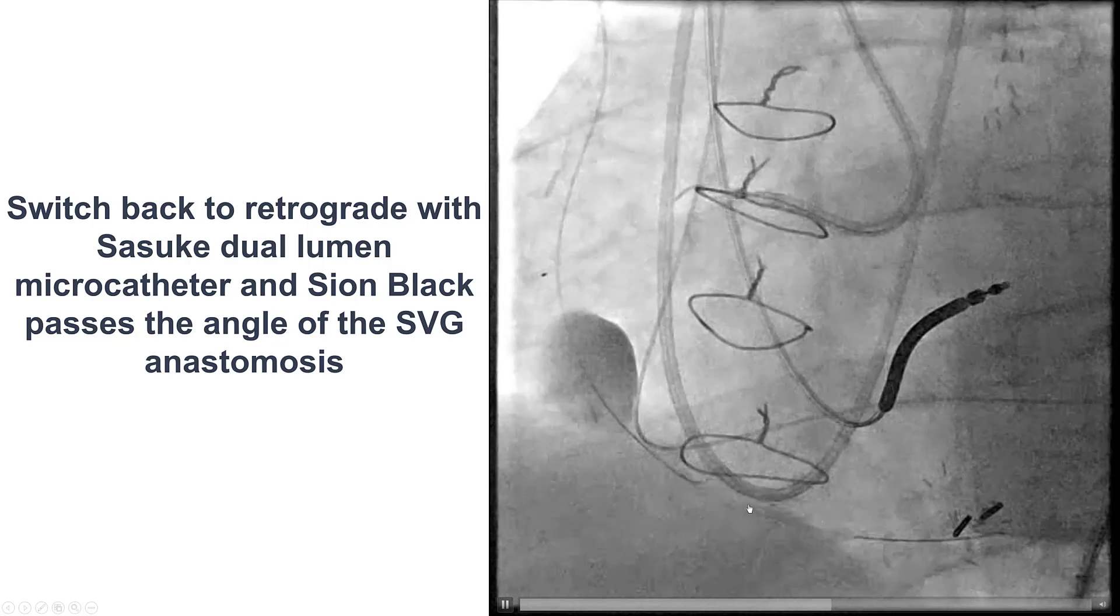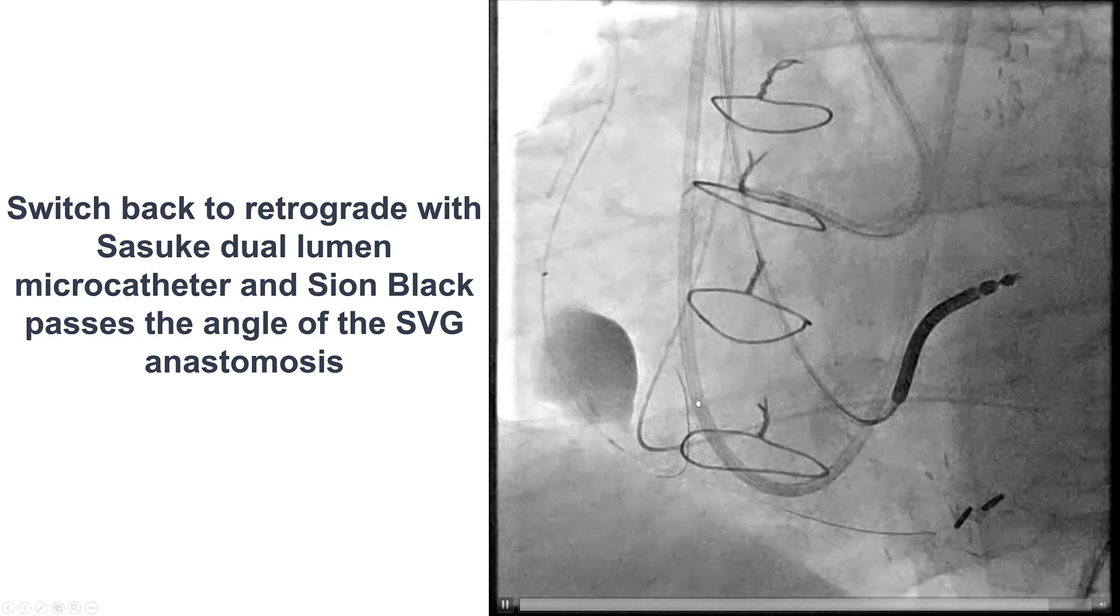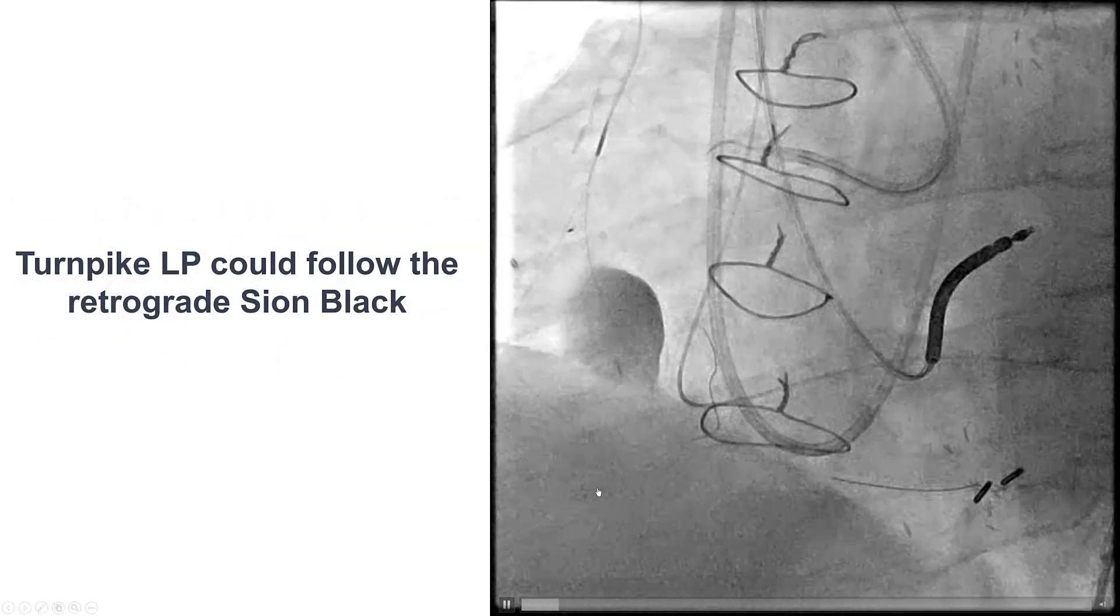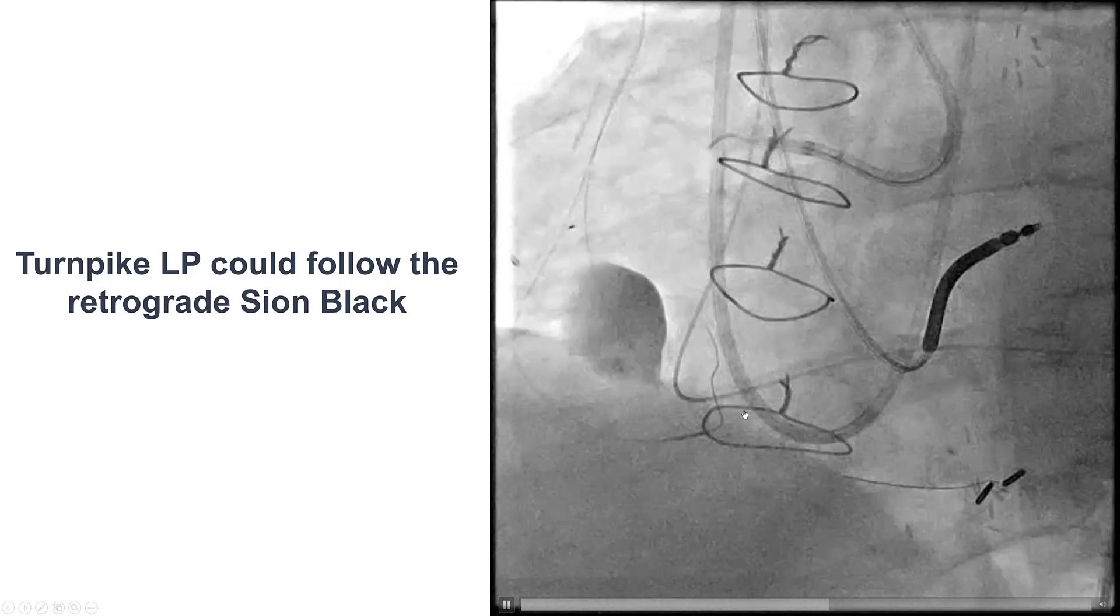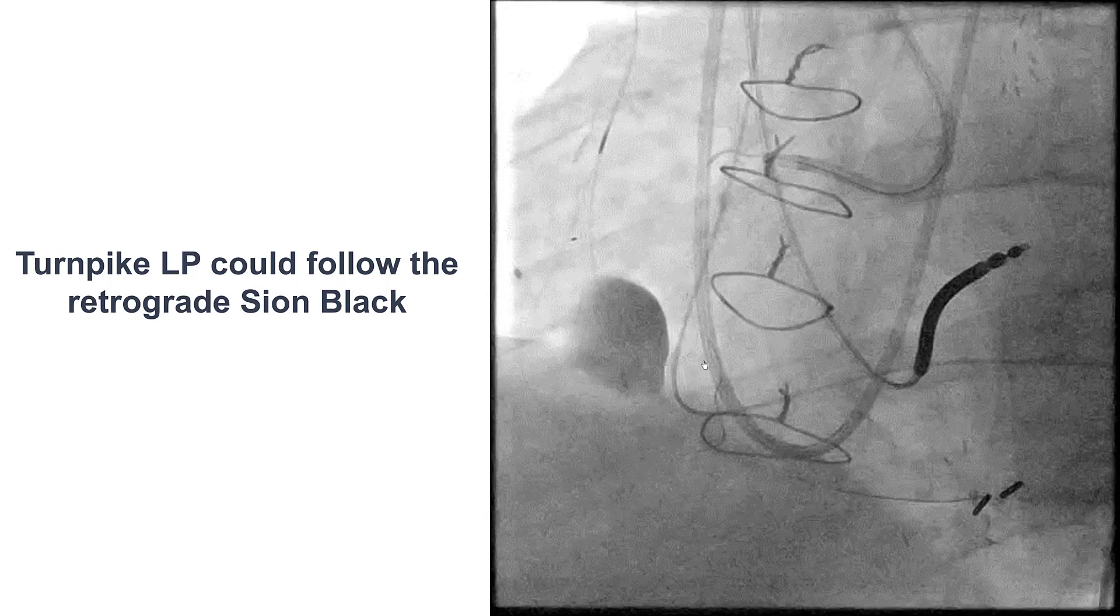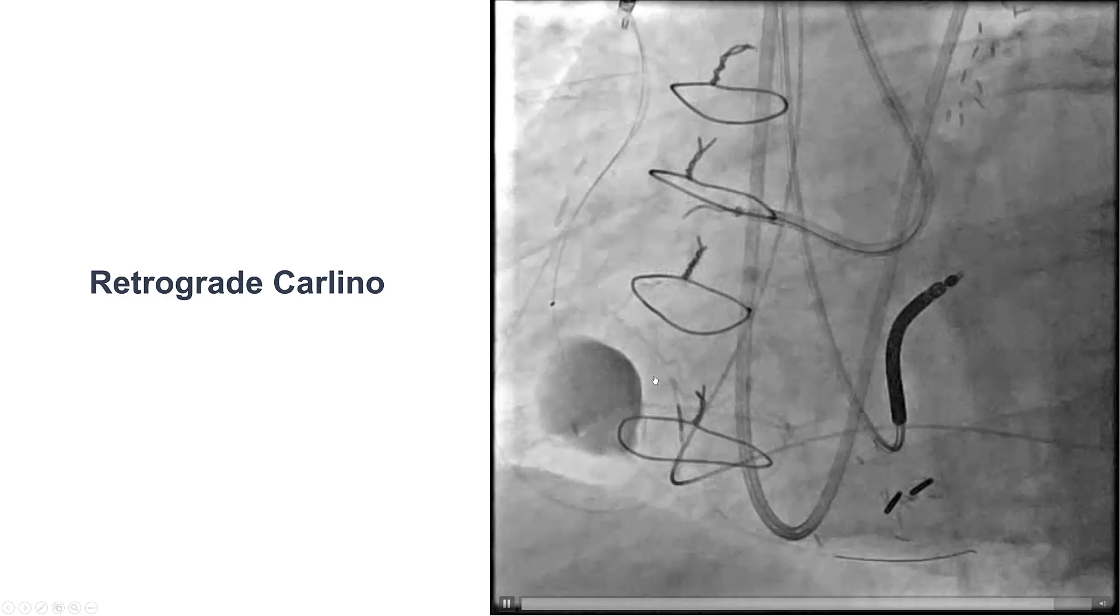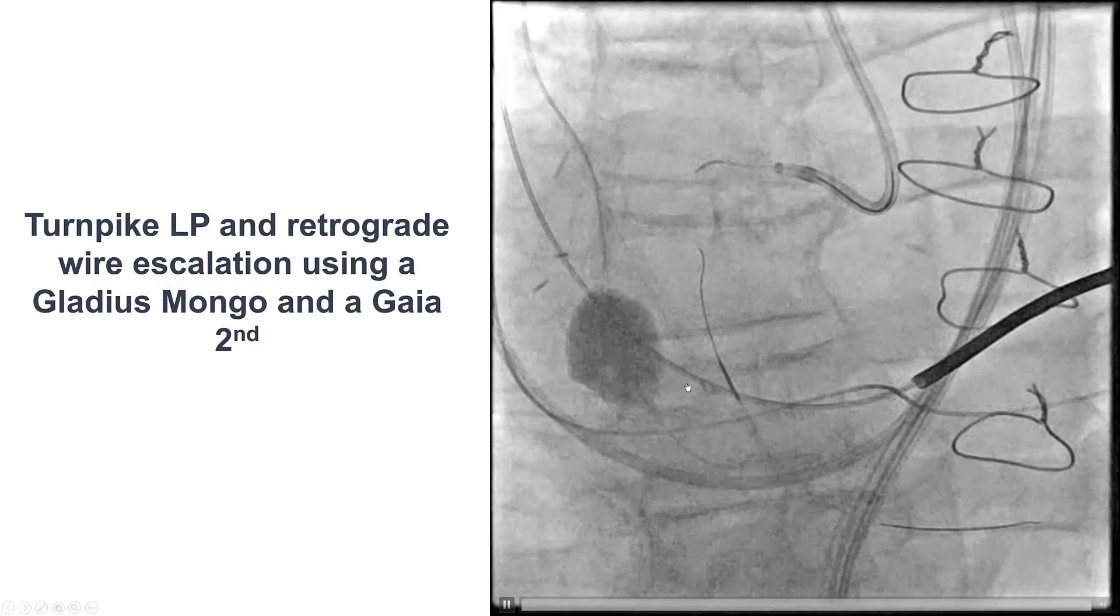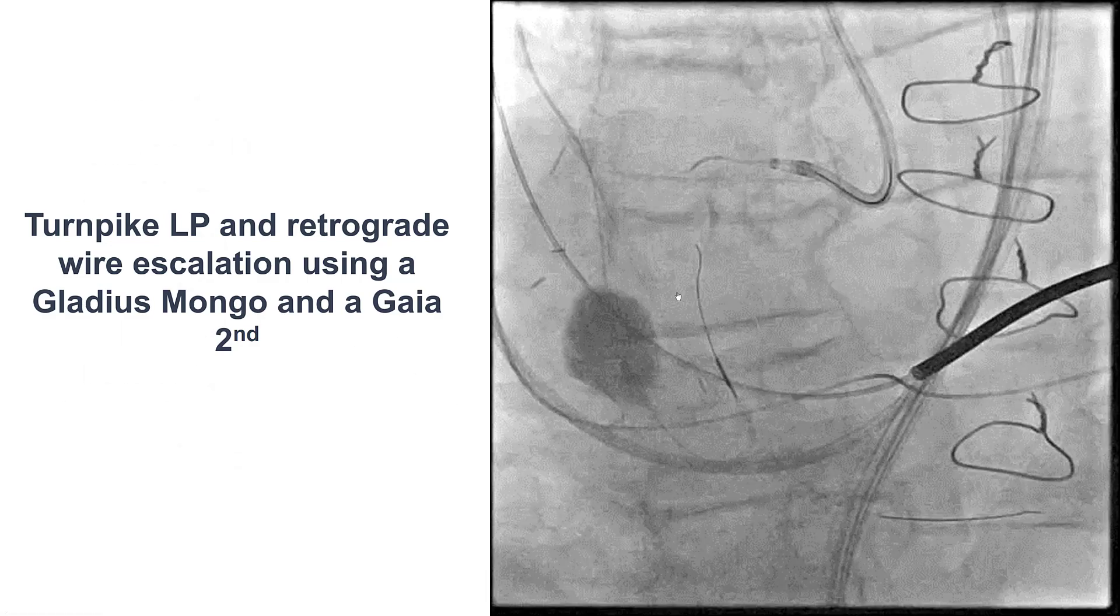We tried a Sasuke dual-lumen microcatheter that was advanced to the distal right coronary artery. And eventually, we were able to advance a Gion Black guide wire retrograde towards the distal to mid-right coronary artery. We were then able to advance a Turnpike LP microcatheter over the Gion Black into the distal right coronary artery, so that now provides us a much better chance for being able to cross retrograde. We did have a lot of resistance to advancing guide wires. We eventually did a Carlino, which is injection of a small amount of contrast through the microcatheter that was wedged within the plaque. And then used again a polymer-jacketed guide wire alternating with a Gaia second, and that seems to advance along the course of the right coronary artery.